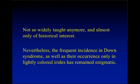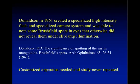Nevertheless, the frequent incidence in Down syndrome, as well as their occurrence only in lightly colored irides, has remained enigmatic. In fact, Brushfield saw these spots ten times more frequently in blue than in brown eyes, and hardly ever saw them in brown eyes. Now David Donaldson, in 1961, created a specialized high-intensity flash and camera system, and was able to note some Brushfield spots in eyes that otherwise did not show them under slit lamp illumination. This apparatus wasn't replicated by others and the study never repeated, but it did indicate that perhaps Brushfield spots were present in darkly colored irides, just very difficult to note.